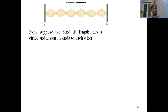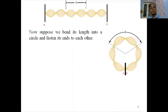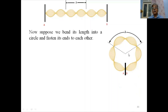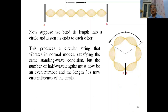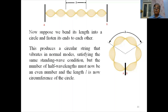Now suppose we bend the string into a circle and fasten its ends to each other. When bent into a circle, all loops fit onto the circumference. This produces a circular string vibrating in normal modes satisfying the same standing wave condition, but with a key difference: here, not an odd multiple of half-wavelengths, but an integral multiple of whole wavelengths fits around the circle.